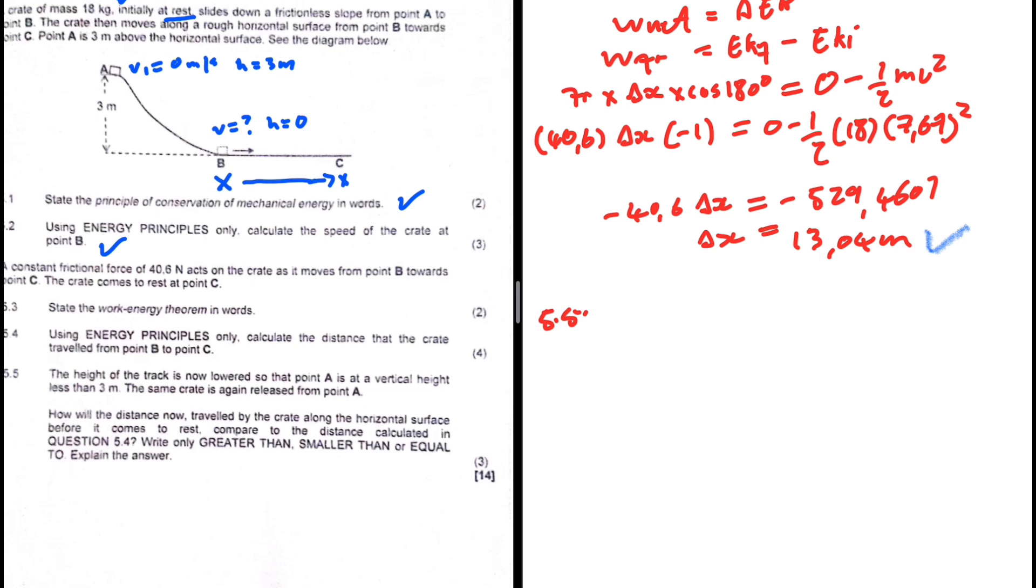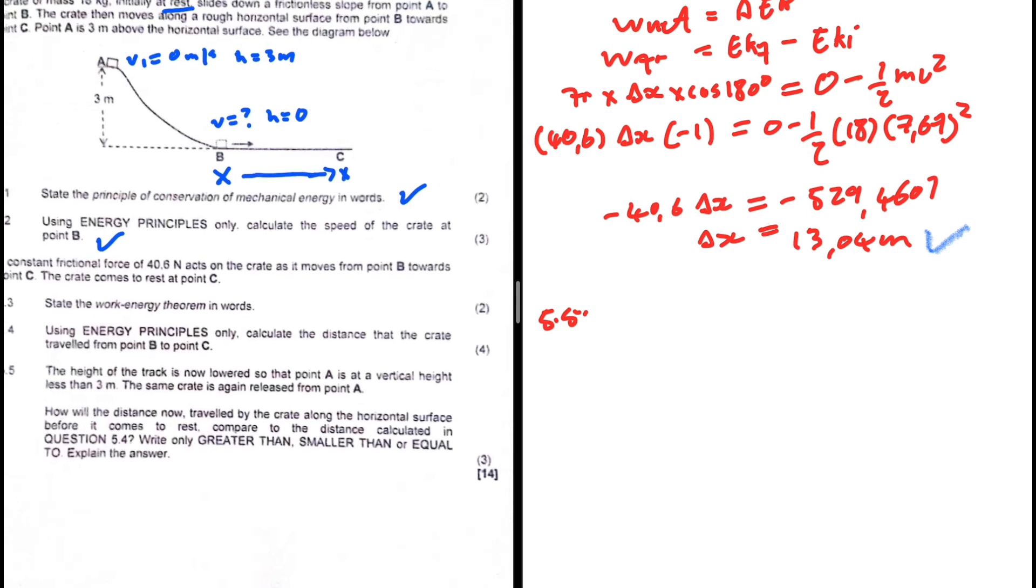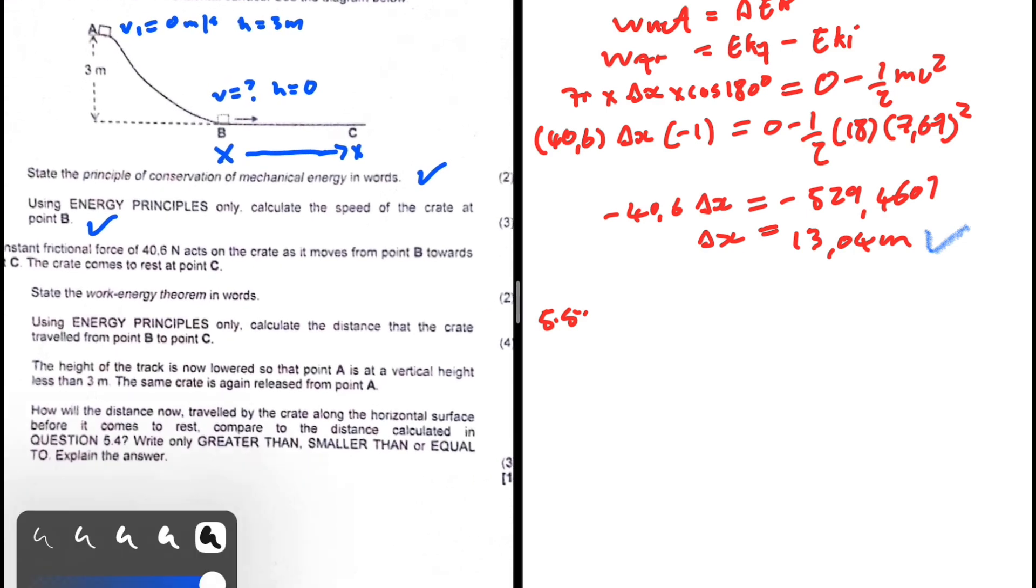What about 5.5? Let's make sure we answered what we were supposed to in 5.4 - distance that the crate travels from point B to C. Okay that's fine. 5.5: The height of the track is now lowered so that point A is at a vertical height less than 3 meters. The same crate is again released from point A. How will the distance now traveled by the crate along the horizontal surface before it comes to rest compare to that calculated in 5.4?